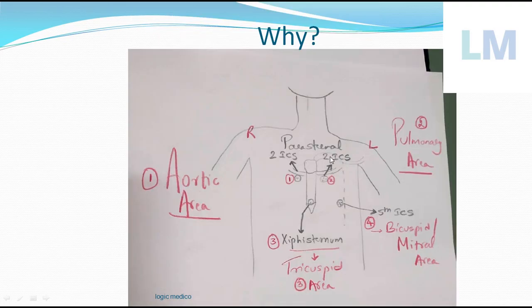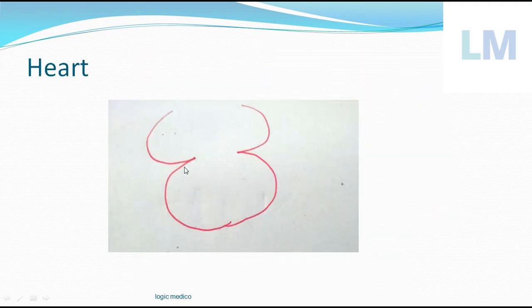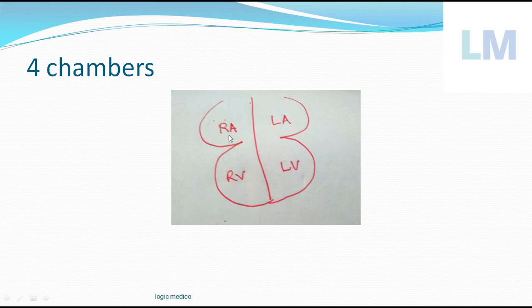Those are the four areas. To understand why these areas, you have to know the position of the valves within the heart. Here is a human heart with four chambers: two atria above - right atrium and left atrium - and two ventricles below - right ventricle and left ventricle. There is a wall separating the atria called the interatrial septum, and the wall separating the two ventricles is called the interventricular septum.